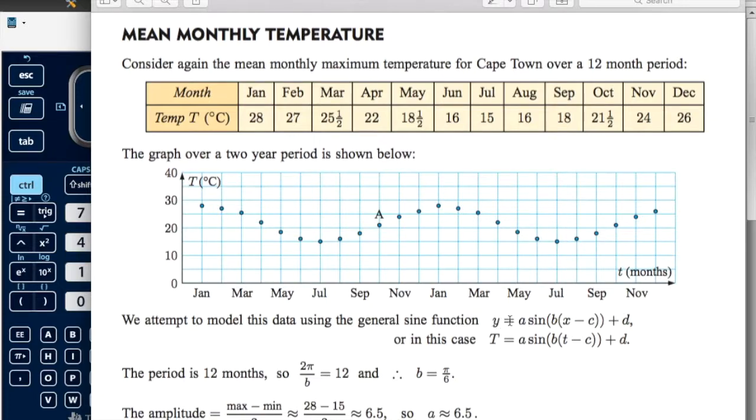use the A, B, and D that the calculator has worked out for you. Substitute them into the function and then manually figure out C.